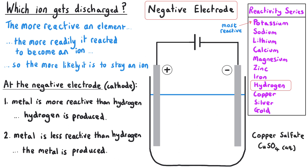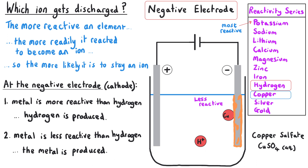In a second example, copper sulfate solution has copper 2+ ions. Copper is less reactive than hydrogen, so the copper ions will be discharged and we'll see a buildup of copper on the negative electrode, or it may fall off and build up underneath. To make things faster, it's worth memorising the metals less reactive than hydrogen, because there are so few of them. Gold is very unlikely to be used as an example, silver is probably unlikely too, so really the metal to watch out for is copper. Most of the others are more reactive than hydrogen.